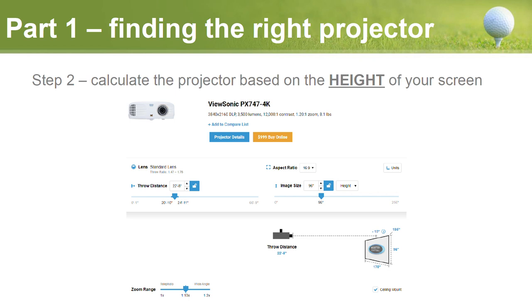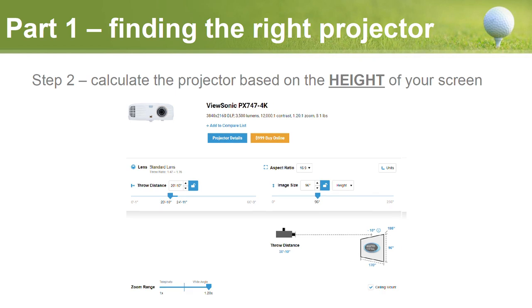The projector I use is a 4K projector but not a short throw. On the calculator, leave the aspect ratio at 16:9 and adjust the image height — in my case I have a 10x8 screen, so I adjust image height to 96 inches. My throw distance ends up being 22 feet. With my zoom lens, if I set it to 1.2 wide angle, the throw distance is now 20 feet 10 inches. You can see the actual range based on the zoom you're using.